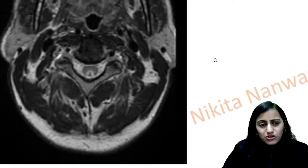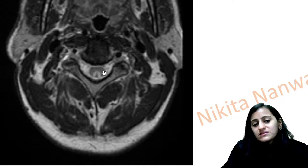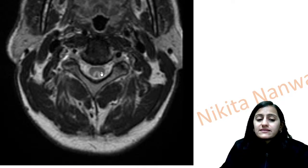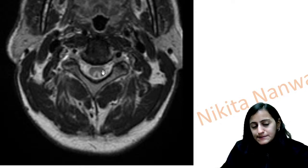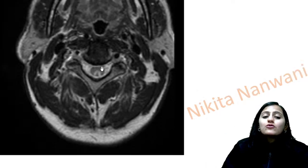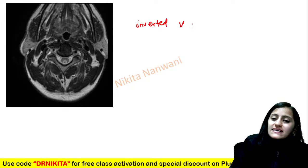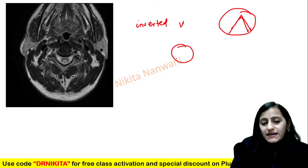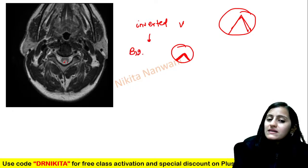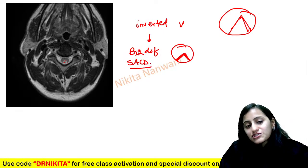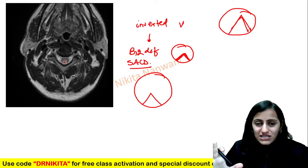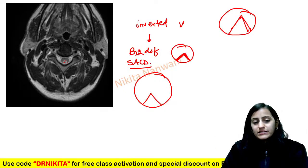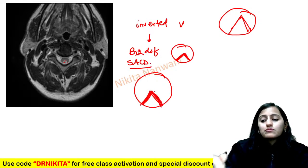This MRI of the spinal cord — also discussed in this morning's KBMD session — shows hyperintensity in the dorsal columns, like an inverted V. The inverted V sign in the spinal cord indicates dorsal column involvement seen in vitamin B12 deficiency — subacute combined degeneration of the cord. This leads to loss of proprioception and vibration sensation. Think: vegetarian diet, increased methylmalonic acid.